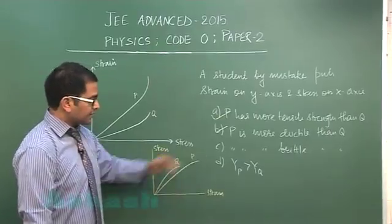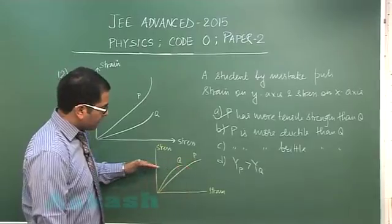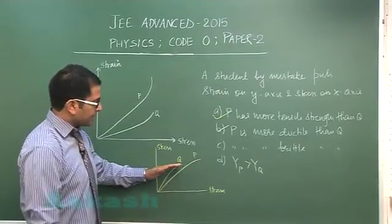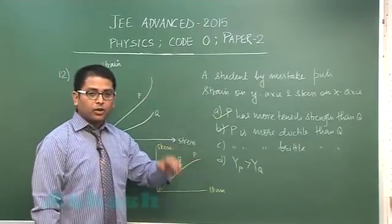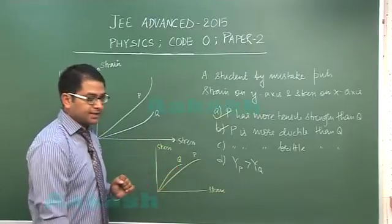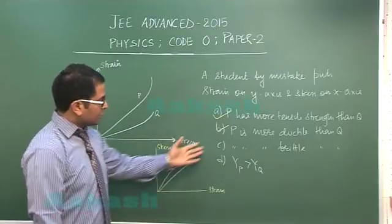Because in a lower value of stress Q breaks as when P breaks. So C option would be incorrect.